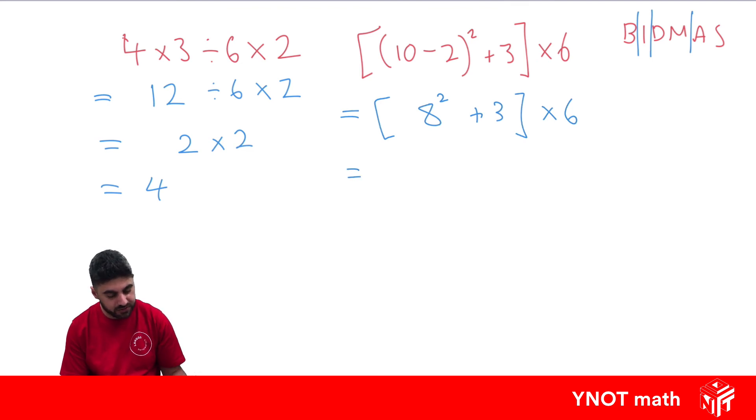Now, out of everything left, brackets still need to come first. Out of everything to do in the bracket, we've got an indice and an addition, and we need to do that indice first. So we're going to have 8 squared, which means 8 times 8, which is 64. And finally, we can do the 64 plus 3, which is going to give us 67.